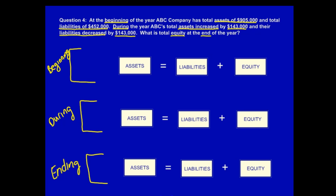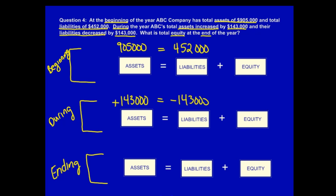I'll start at the top and move down. Beginning assets: $905,000. Beginning liabilities: $452,000. Moving to during the year: assets increased by $143,000, liabilities decreased by $143,000. I've filled in all my knowns, now I have to solve for my unknowns. Solving for equity, I know that it's equal to $453,000.